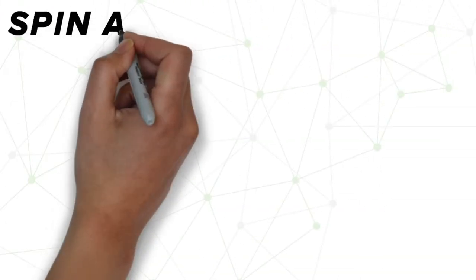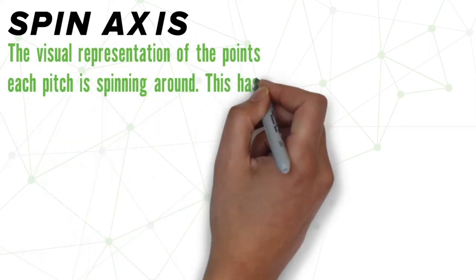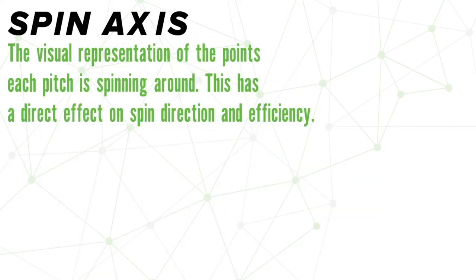Spin axis is the visual representation of the points each pitch is spinning around. It has a direct effect on both spin direction and spin efficiency.